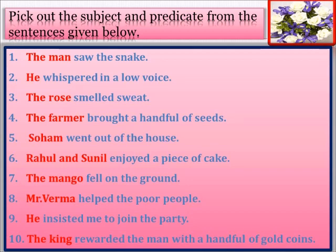In the fourth sentence 'the farmer' is the subject, in the fifth sentence 'Soham' is the subject, in the sixth sentence 'Rahul and Sunim' are the subject. In the seventh sentence 'the mango' is the subject, in the eighth sentence 'Mr. Verma' is the subject, in the ninth sentence 'he' is the subject, and in the tenth sentence 'the king' is the subject. The remaining part of all these sentences will be called the predicate.